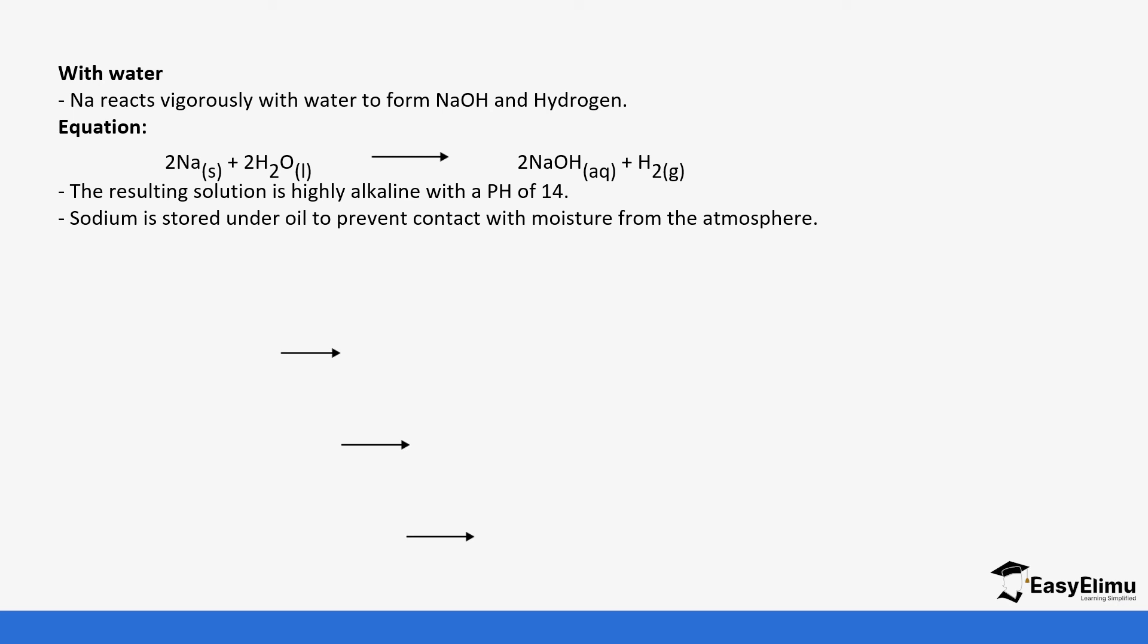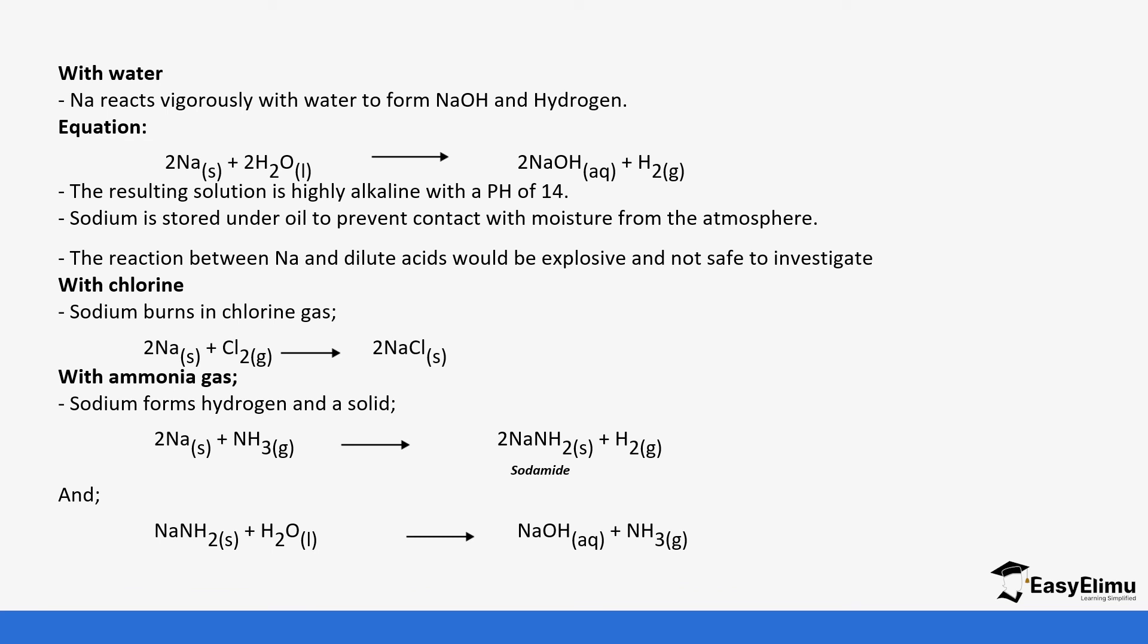The reaction between sodium and dilute acids is very explosive, so we never usually do it in the lab. Sodium also burns in chlorine to form sodium chloride. Sodium reacts with ammonia to form sodium amide as the first intermediate, which further reacts with water to form sodium hydroxide and ammonia.